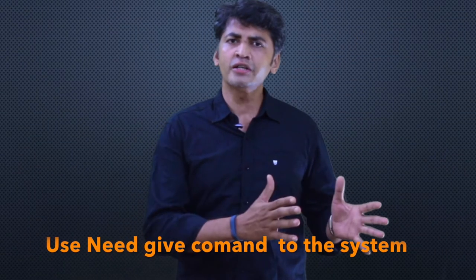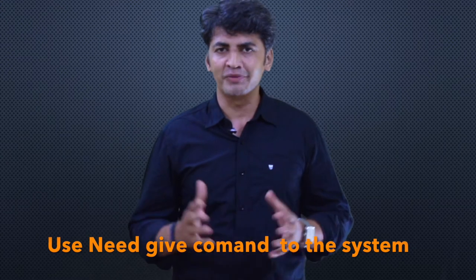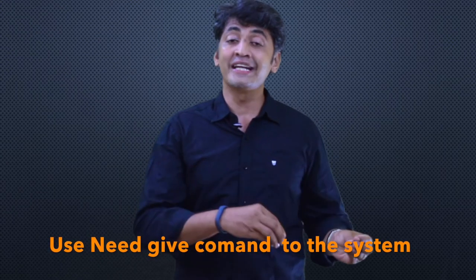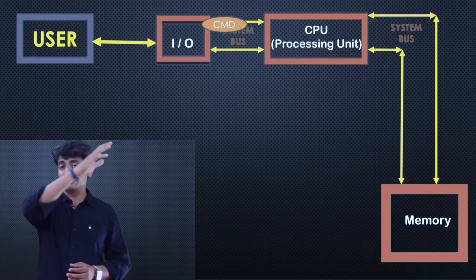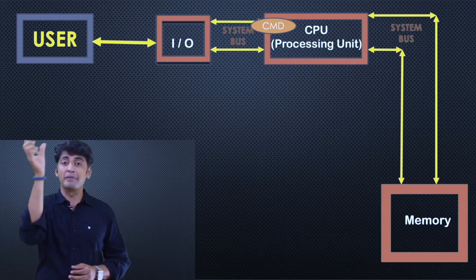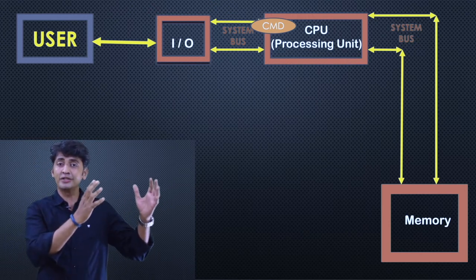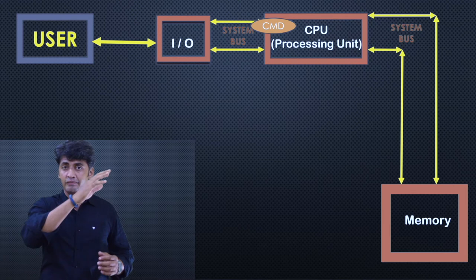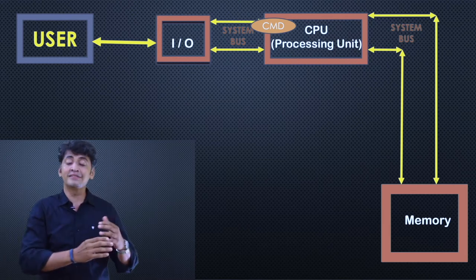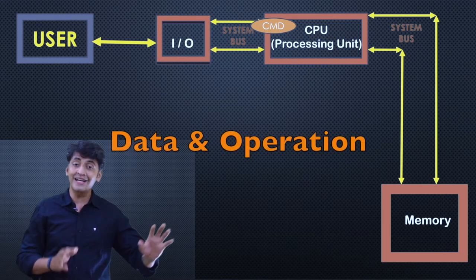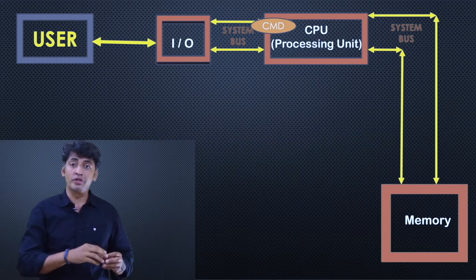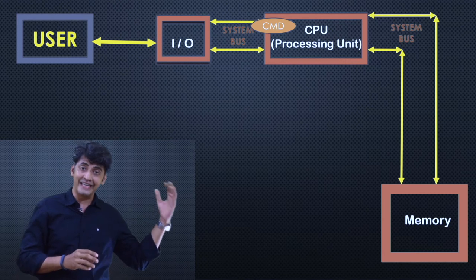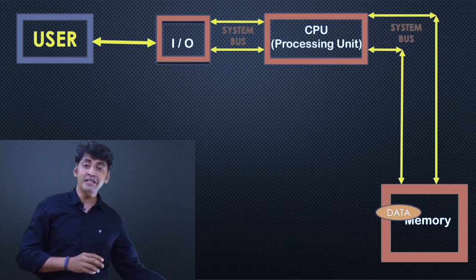Every time a user wants to perform some operation with the computer system, the user needs to give a command to the system. The user will give the command to the central processing unit with the help of I/O devices. The central processing unit will get the command from the user, process the command, then identify which is the data and which is the operation. After identifying the data, the CPU will fetch the data from the memory to the processor.